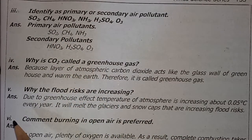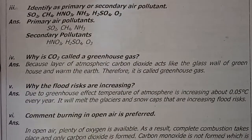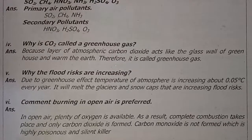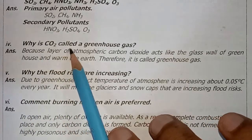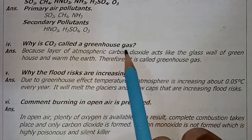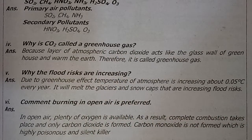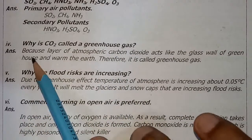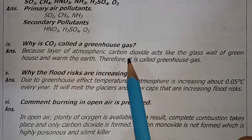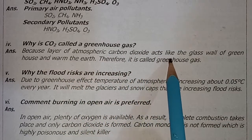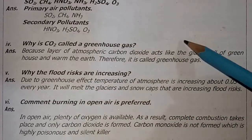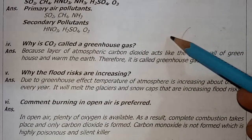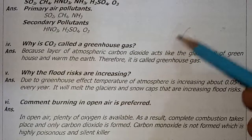Let's move to the fourth question: Why is carbon dioxide called a greenhouse gas? Because the layer of atmospheric carbon dioxide acts like a glass wall. If carbon dioxide is acting like glass, it behaves similarly to the glass panels of a greenhouse.